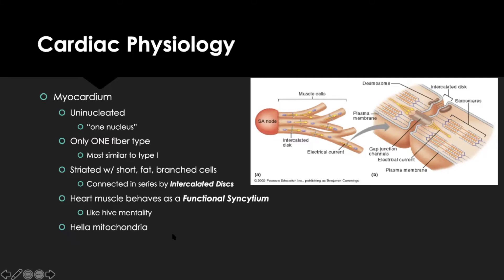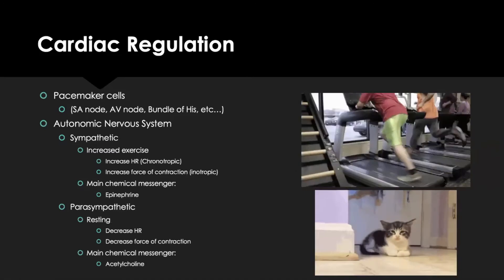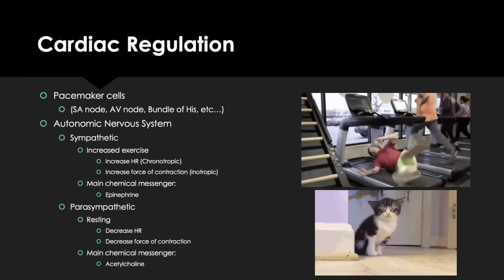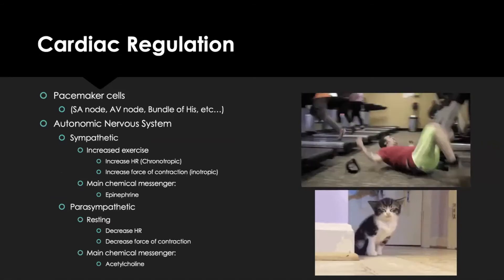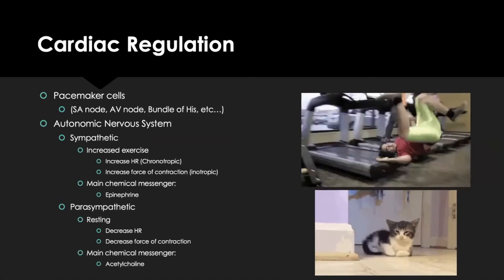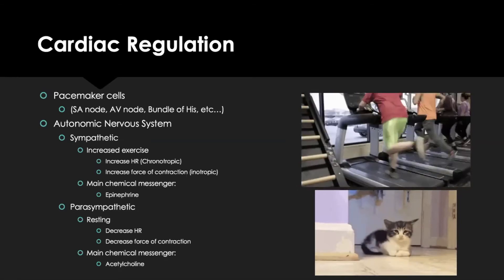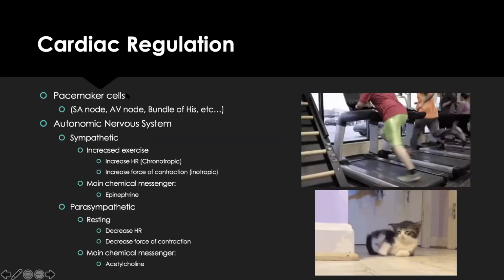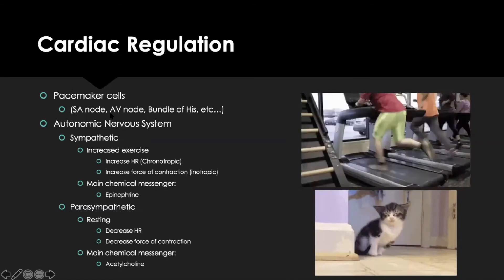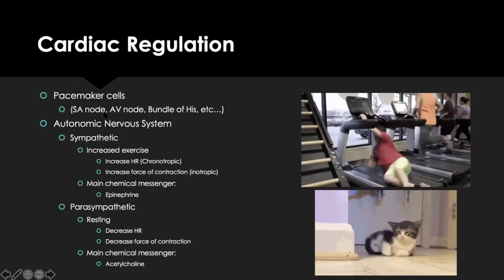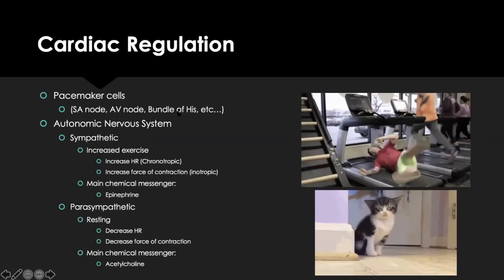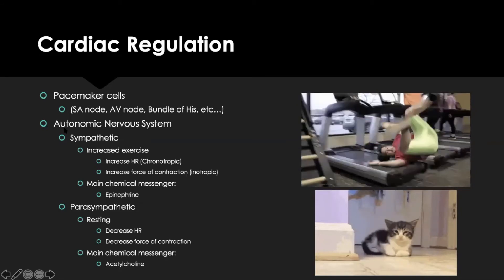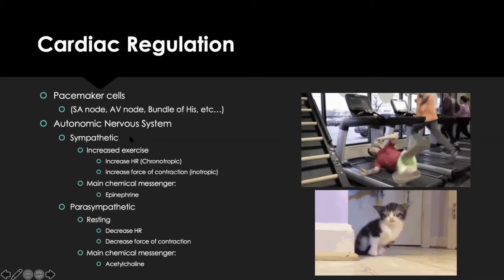Another reason cardiac muscle is similar to type 1 is because of its mitochondria. Something unique about the heart is that it has pacemaker cells. Instead of receiving electrical signals from the nervous system, the heart produces its own action potential. The main pacemaker is the SA node — it determines your heart rate. The AV node and bundle of His are backups that also produce electrical signals.